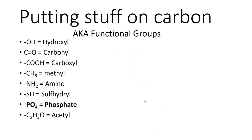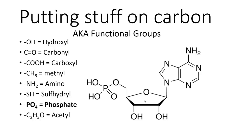Our second-to-last functional group is a phosphate group. Here you can see it as part of a nucleotide — this is the nucleotide adenine. These phosphate groups are what allow these nucleotides to hook up together to make up our DNA and our RNA. Oftentimes you'll see the phosphate group abbreviated as PO4, but here you're seeing it with hydrogens attached to two of those oxygens. Most of the time this functional group would be shown with those hydrogens missing and those oxygens bearing a negative charge. We'll see phosphates come up again and again, particularly in regards to regulation of protein activity — many of our proteins are controlled by adding or removing phosphate functional groups.